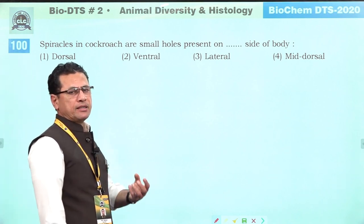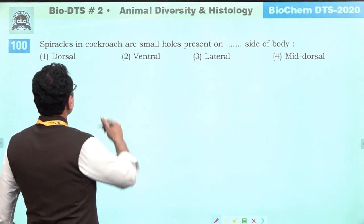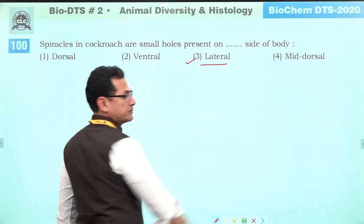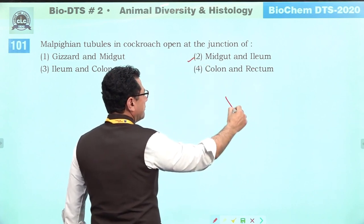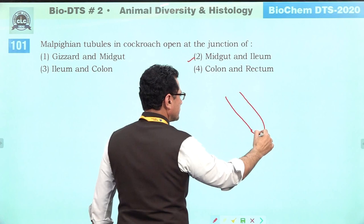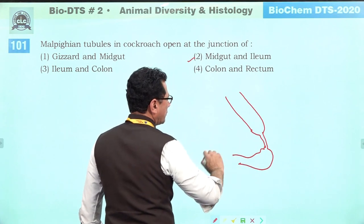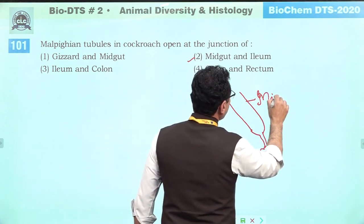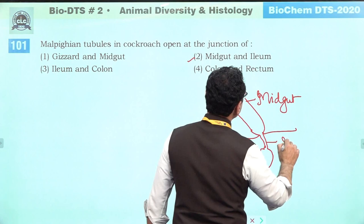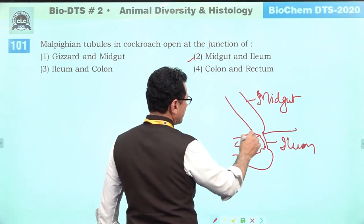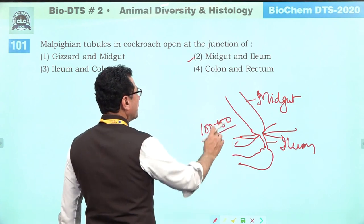Spiracles in cockroaches are openings through which air enters the body. They are present on the lateral side of the body. Malpighian tubules in cockroach open at the junction of mid gut and hind gut (ileum). Answer is two.